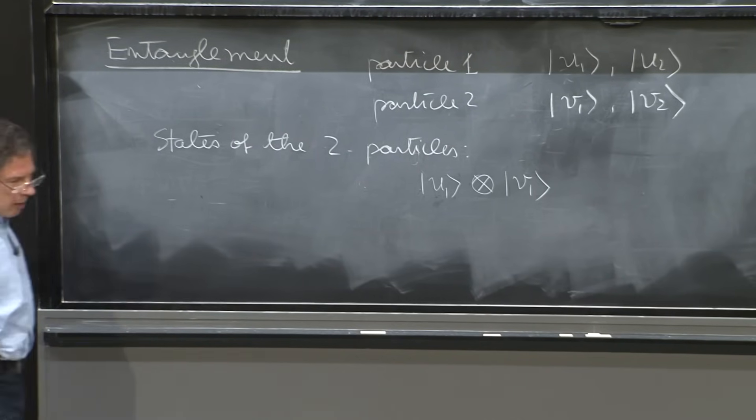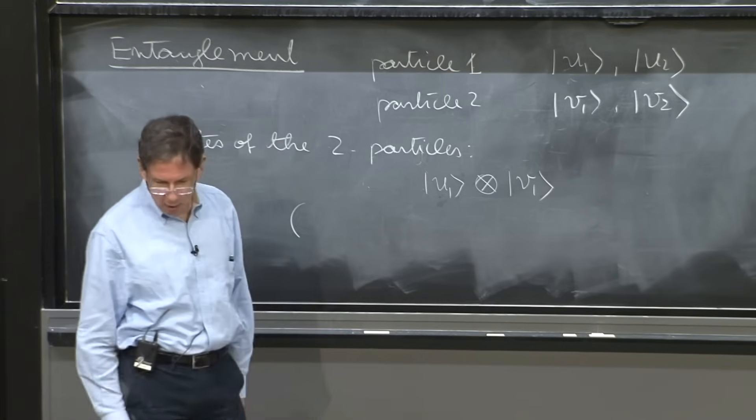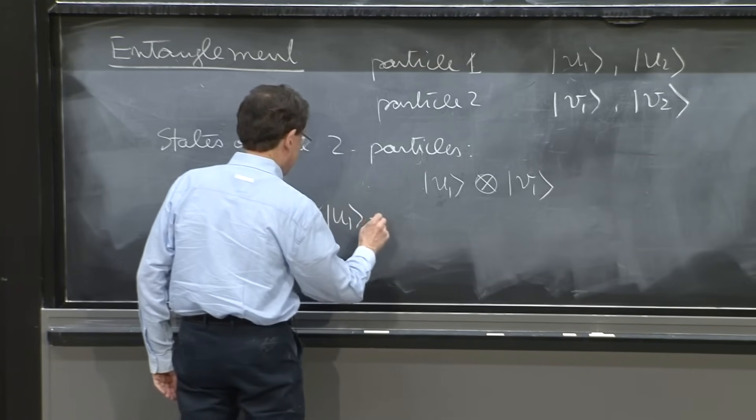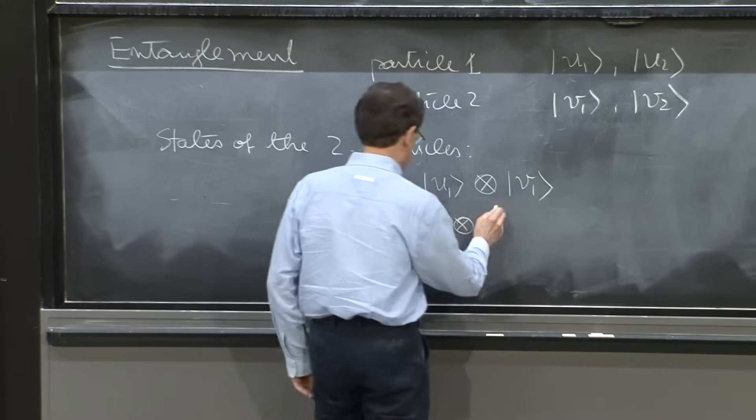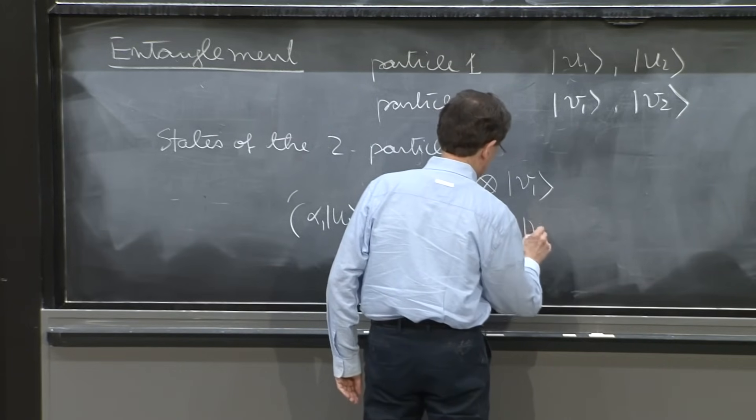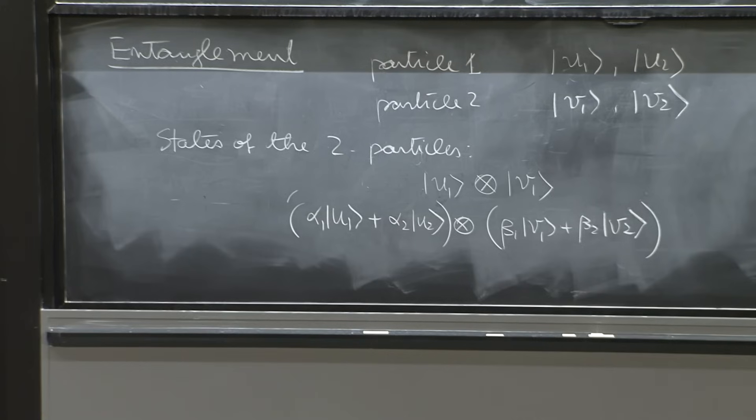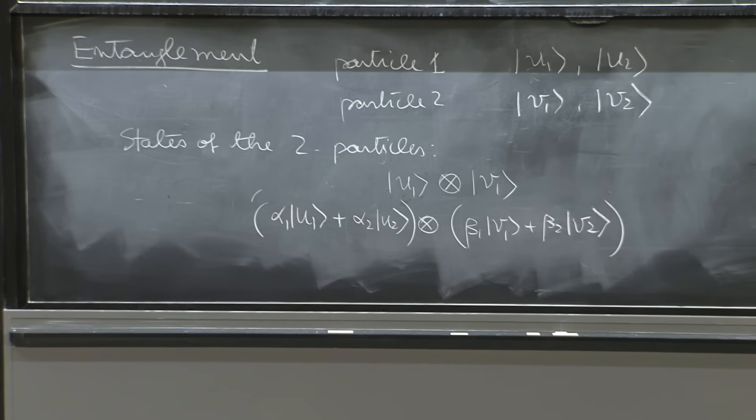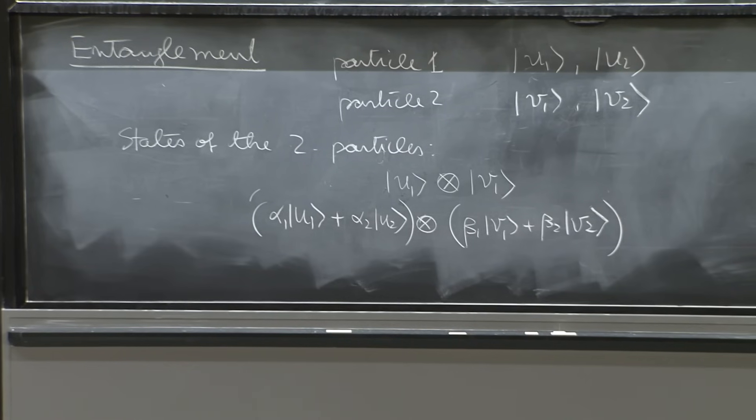Now I could have a different state because particle 1 could be doing something a little different. Could be doing alpha 1 u1 plus alpha 2 u2, and maybe particle 2 is doing beta 1 v1 plus beta 2 v2. And this would be all right. I'm telling you what particle 1 is doing and what particle 2 is doing. And the rules of tensor multiplication to combine those states are just like a product.